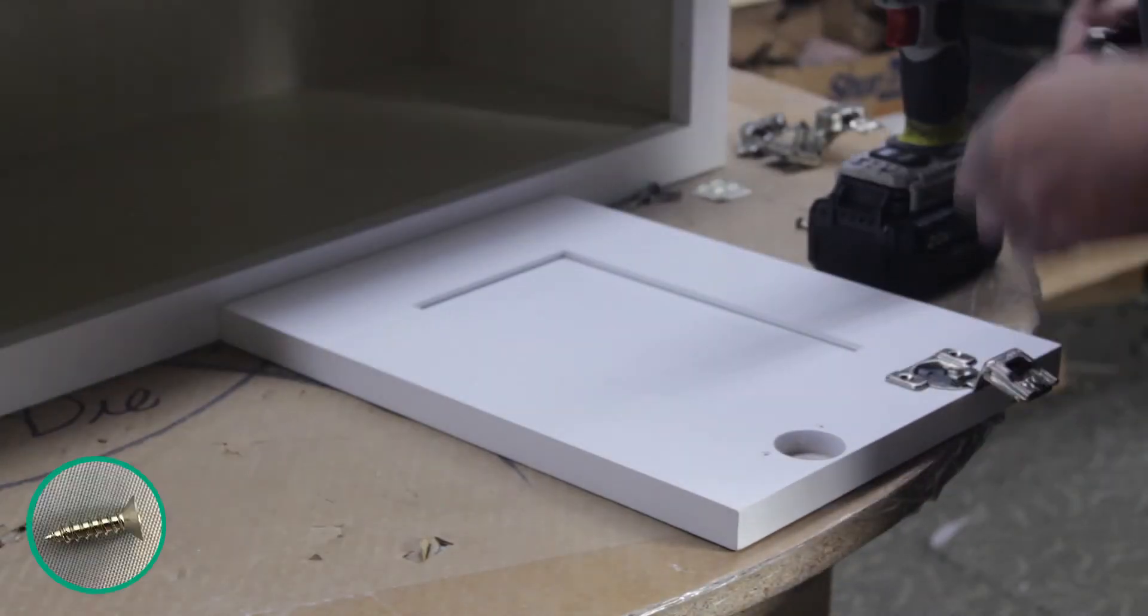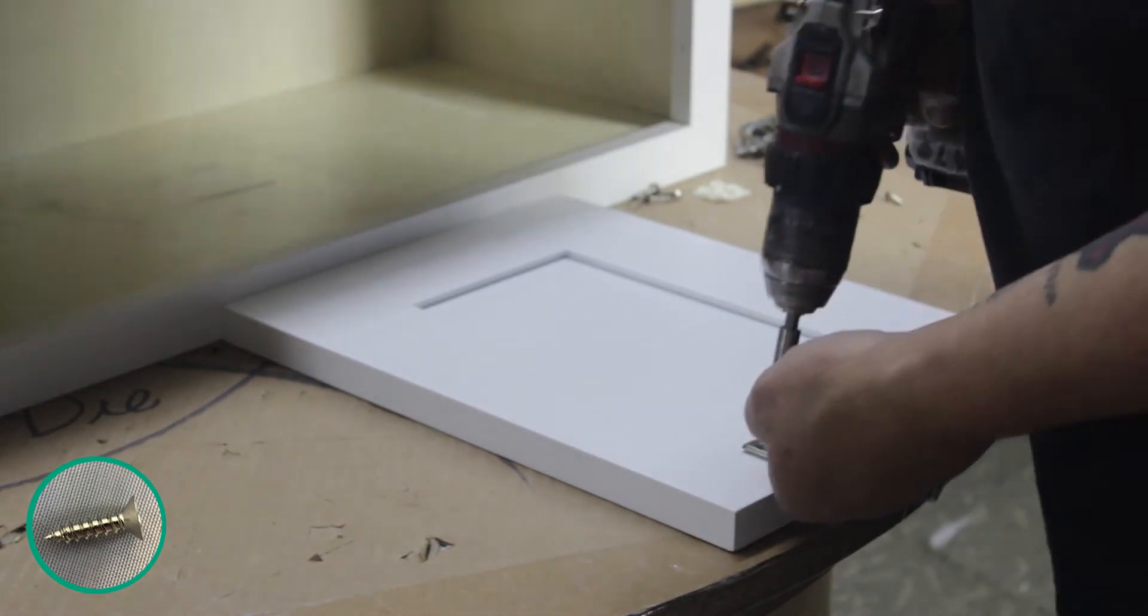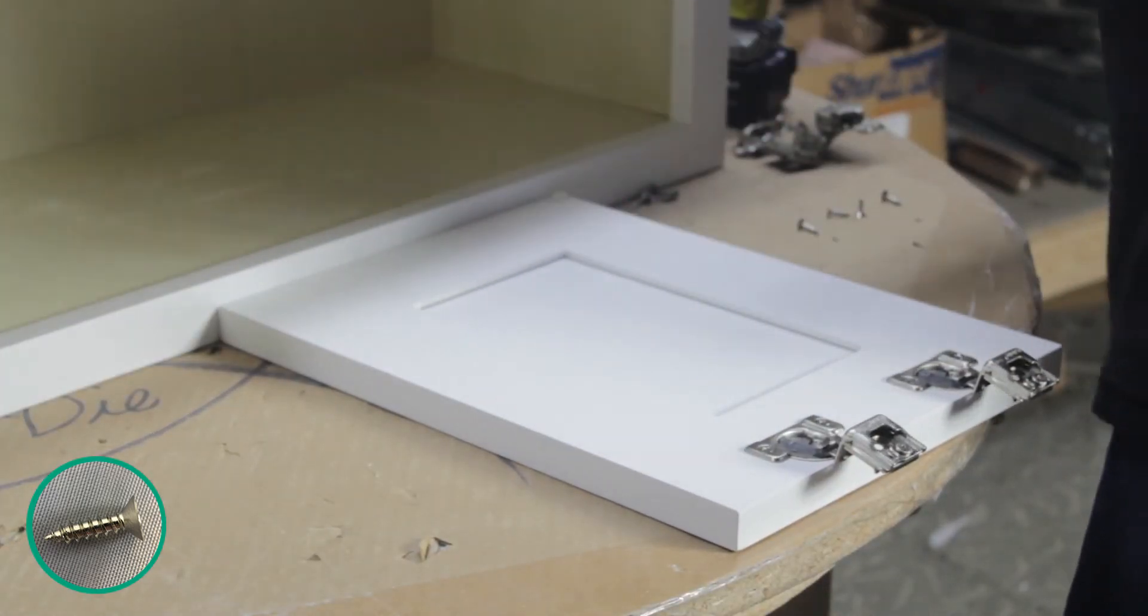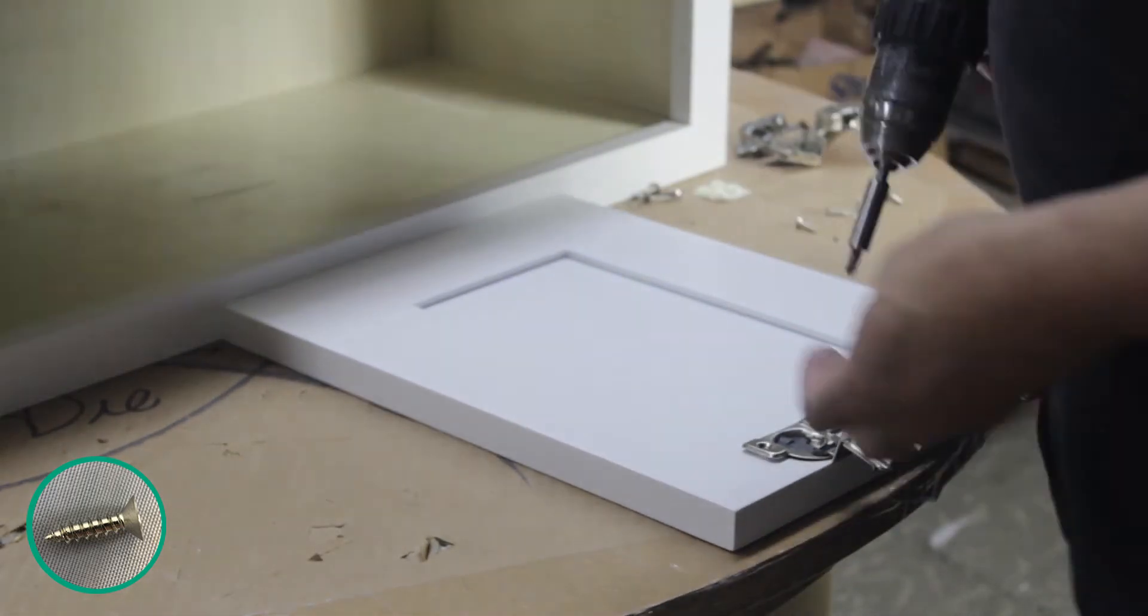Place the door face down and set each hinge into place, making sure the holes on the hinge line up with the holes on the door. Fasten them down with two screws each. Then place a rubber bumper in each corner on the door opposite your hinges.